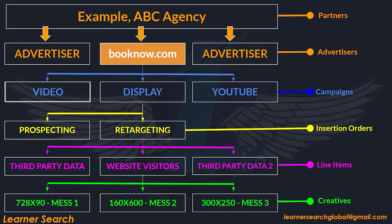Booknow.com wants to create a new campaign in DV360. This advertiser wants to run video, display, and YouTube campaigns. They created a single campaign for each one. For the display campaign, they want to use prospecting and retargeting strategies, so they created separate IOs for each. Under retargeting, they want to target audiences who visited their website and also use third-party data. They created separate line items for website visitors and third-party data. Under these line items, they want to run three creatives in rotation with different ad messages.